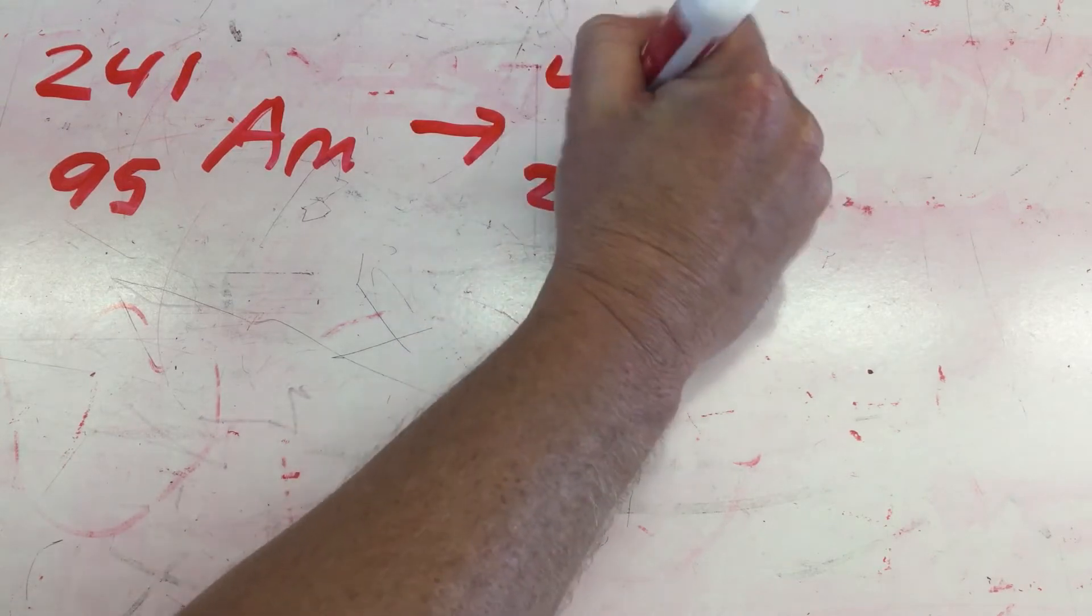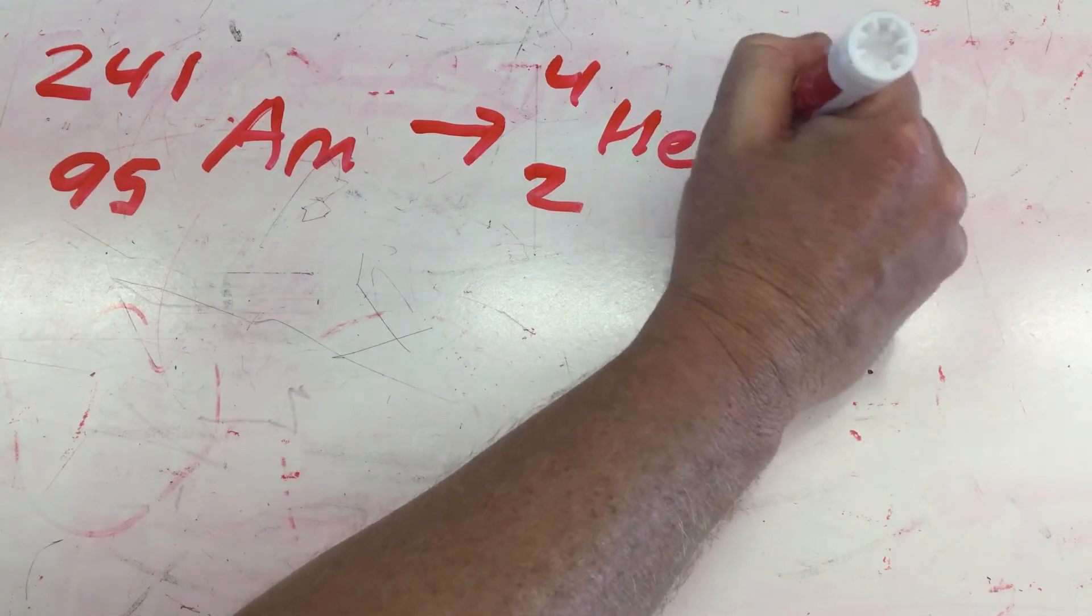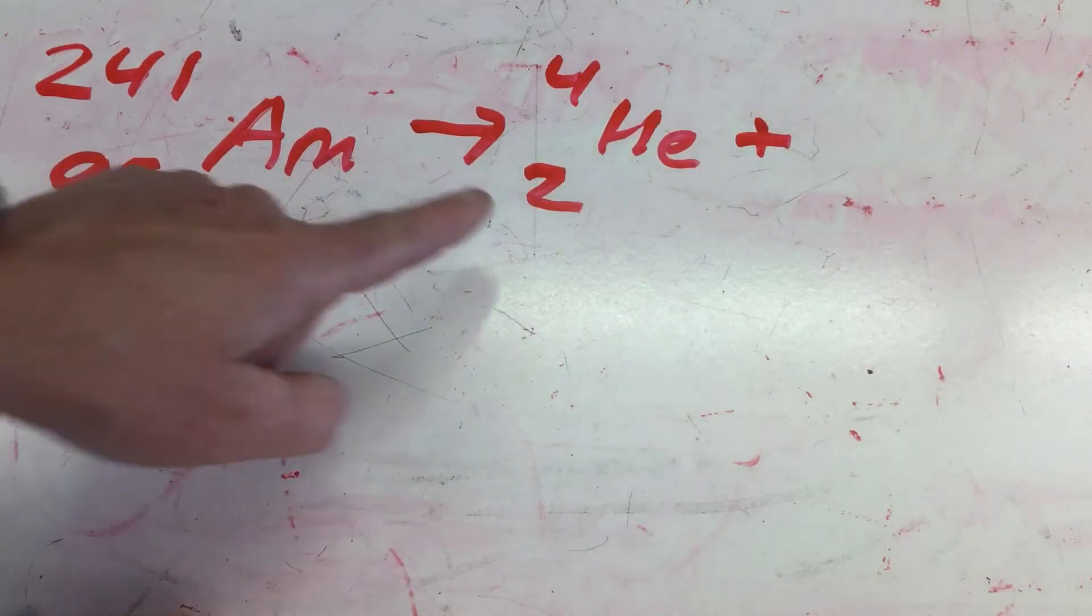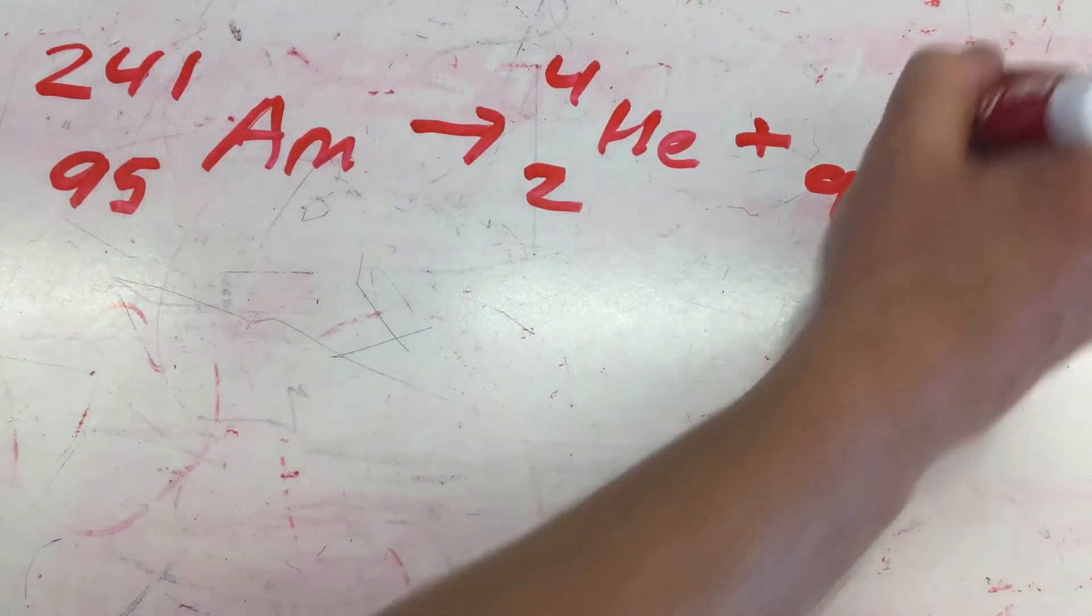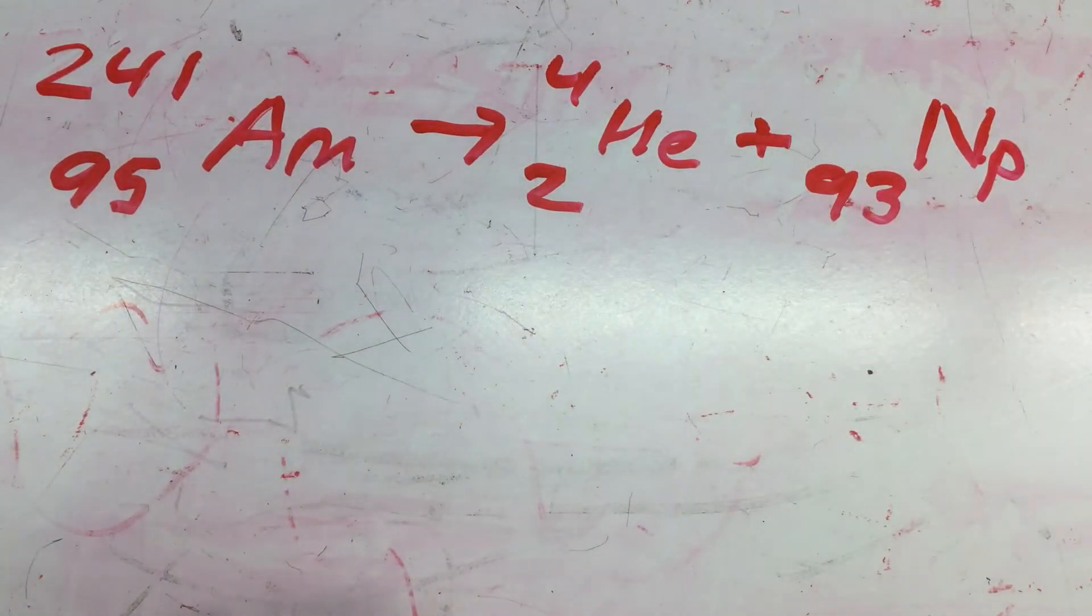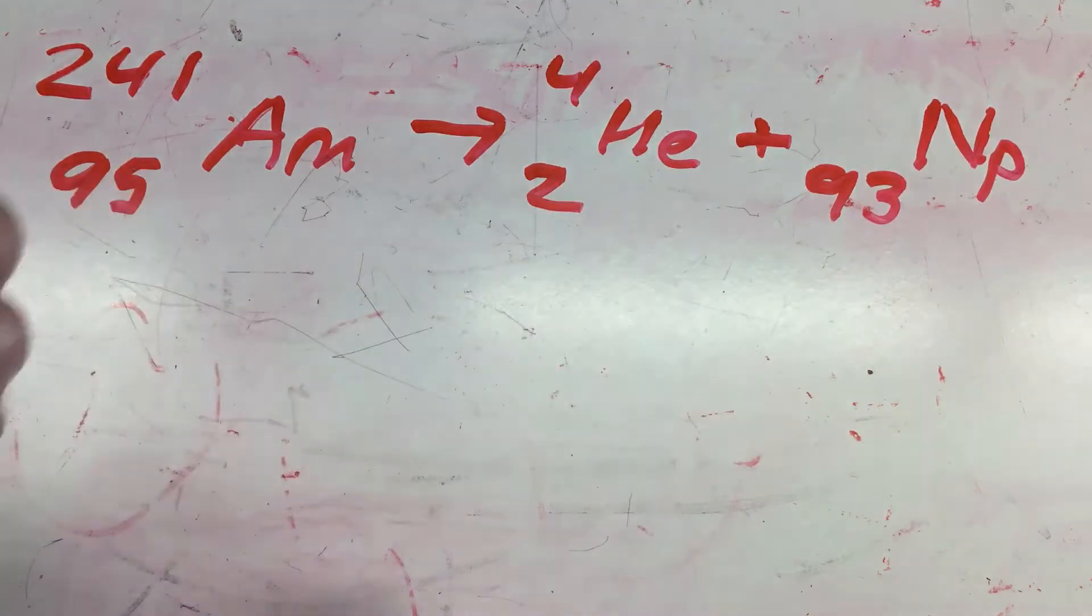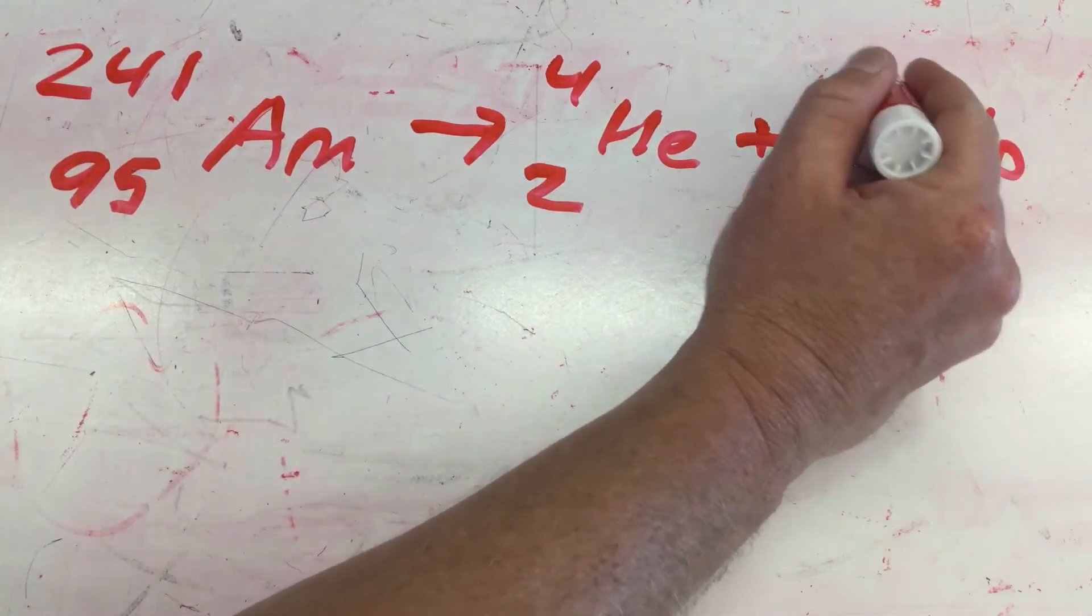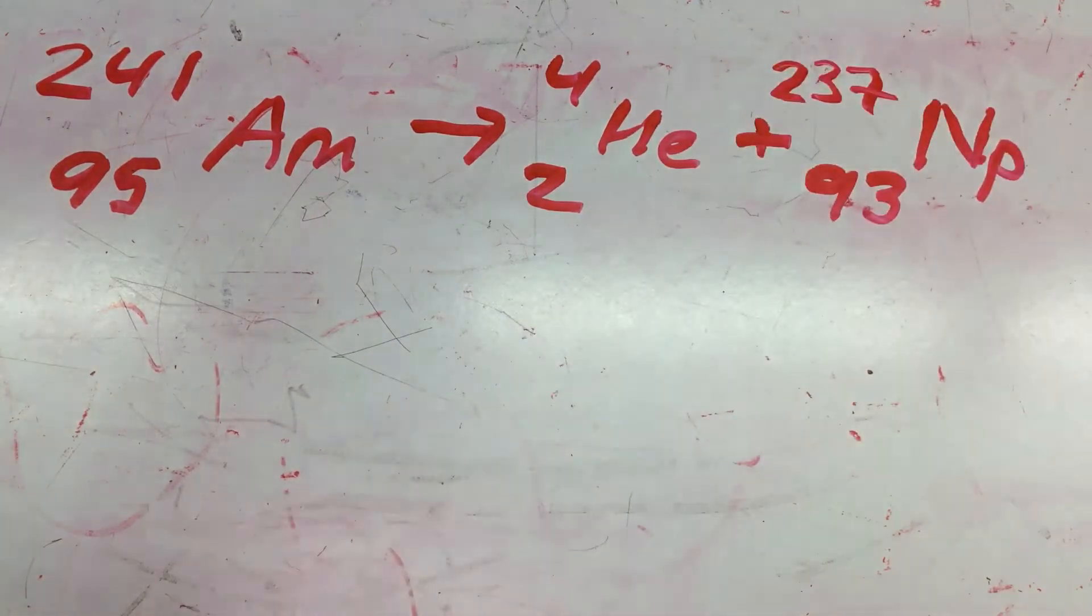This big nucleus is unstable, so it decays by kicking off a helium nucleus, ⁴₂He, also called an alpha particle. If we had 95 protons and lost two, we'll have 93 left, which is neptunium. It goes in the order of the planets - uranium, neptunium, then plutonium is element 94, then americium. This top number is 237, the mass number.